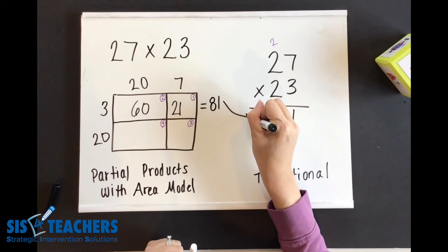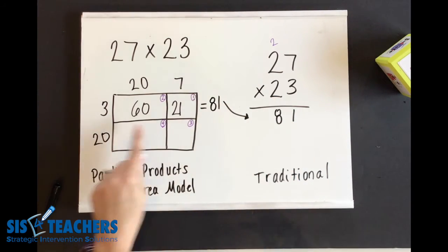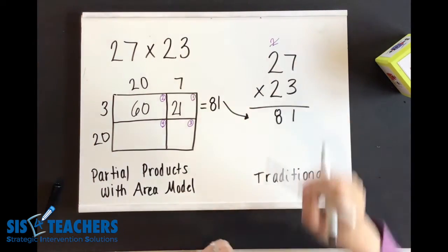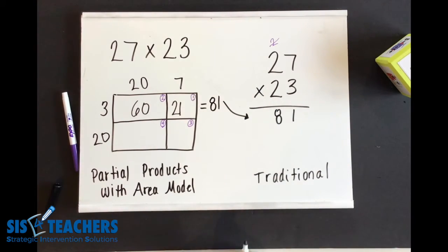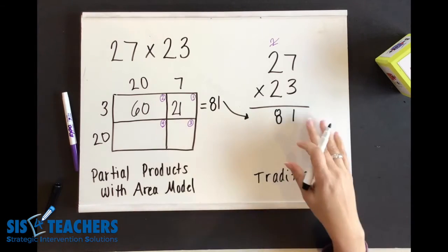Do you see the connection here? How when we did it with partial products? How kids could see it? I'm going to cross this off because I've already used it and go on to the second part to get our answer here.